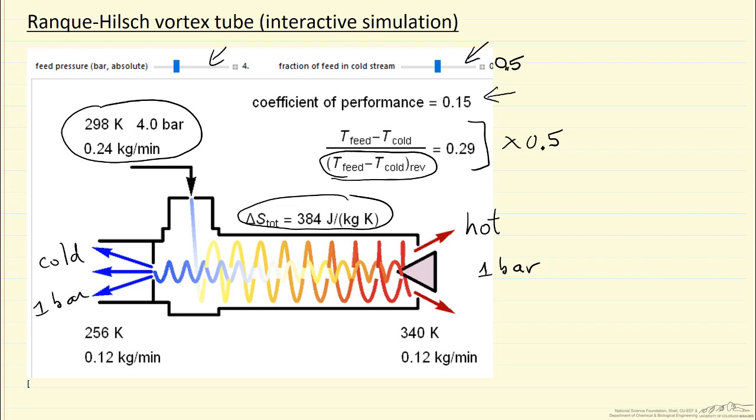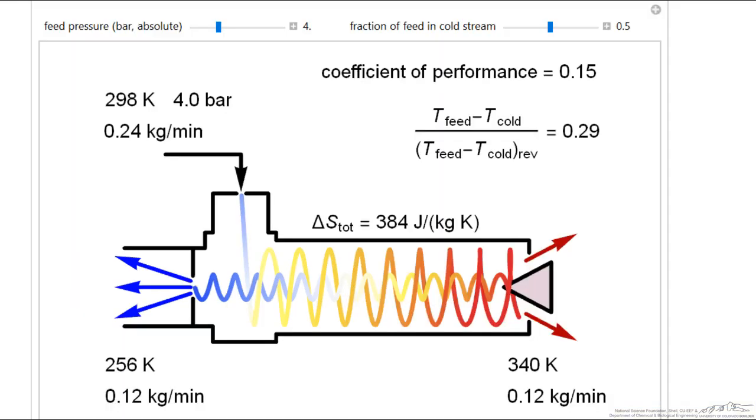So let's look at the actual simulation. If we decrease the fraction of cold gas, you'll notice the temperature goes down, and we can get a low temperature, 248 Kelvin.